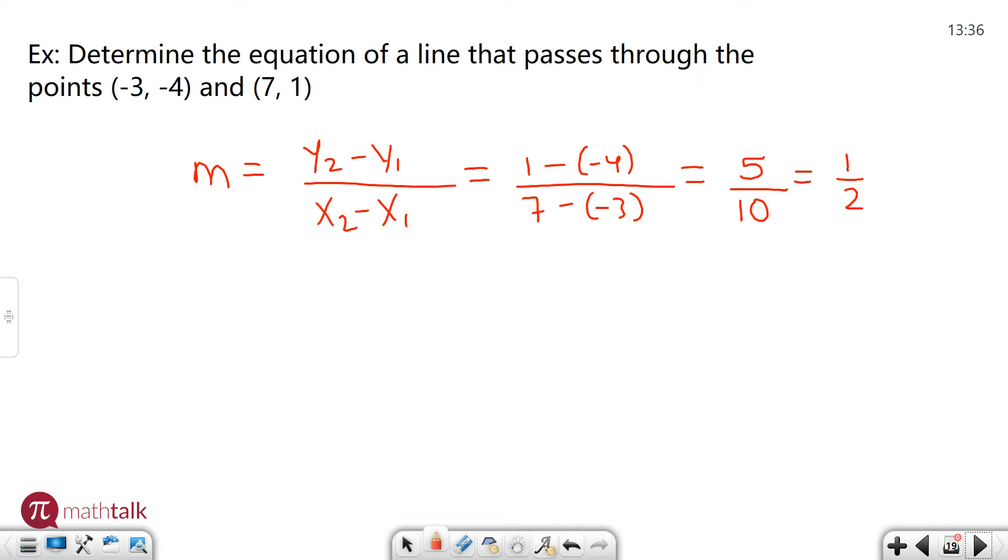So my slope is one half. Now what I need to do is take one of the two xy coordinate points, plug them into x and y for my formula, and solve for b. So y equals mx plus b is the end result that we want. Y and x, I'm going to choose the second point. I'm going to choose y equals one, slope is m which I just determined is one half, my x value is seven because whatever y value you use you have to use the corresponding x value, and I need to figure out what b is.